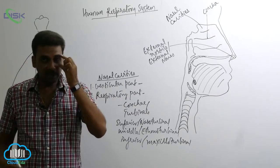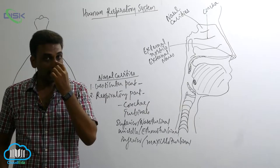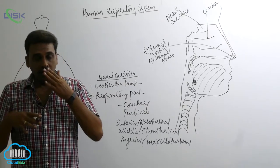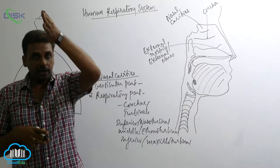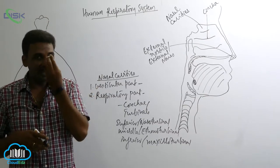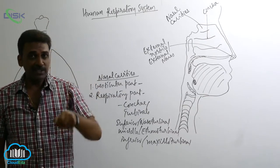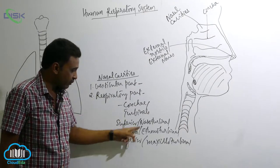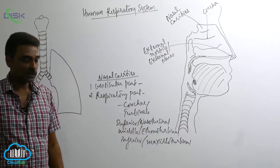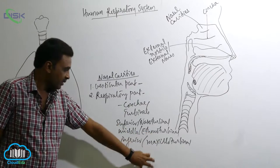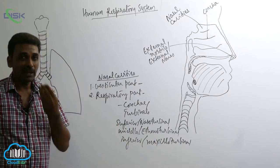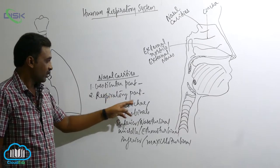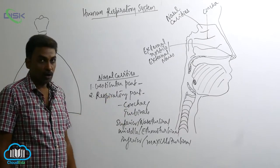You can see the ethmoid bone in between the orbits and the nasal cavity. Coming from the ethmoid bone there is a vertical projection at the center which enters into the nasal septum partly, and they also form the first two turbinals. The inferior nasal concha is actually a separate bone. The conchae are turbinals.